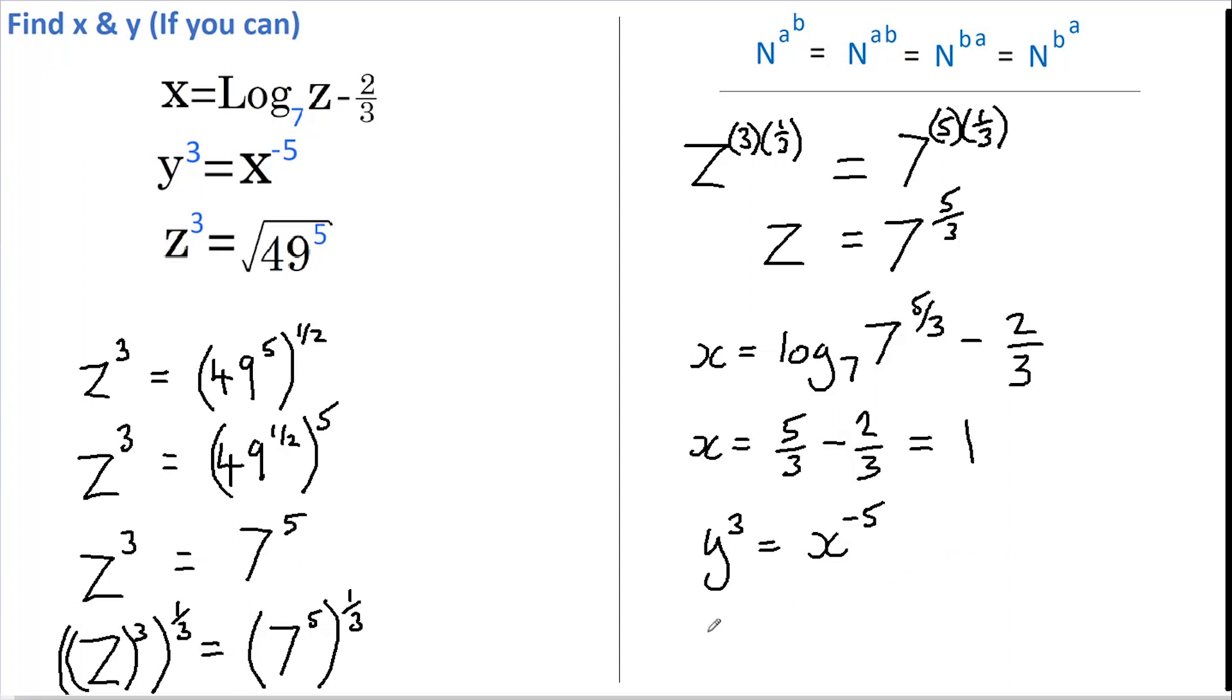X equals 1. Therefore, Y to the 3 equals 1 to the negative 5. Now 1 raised to the power of 5 is just 1, and the negative of 1 is 1.